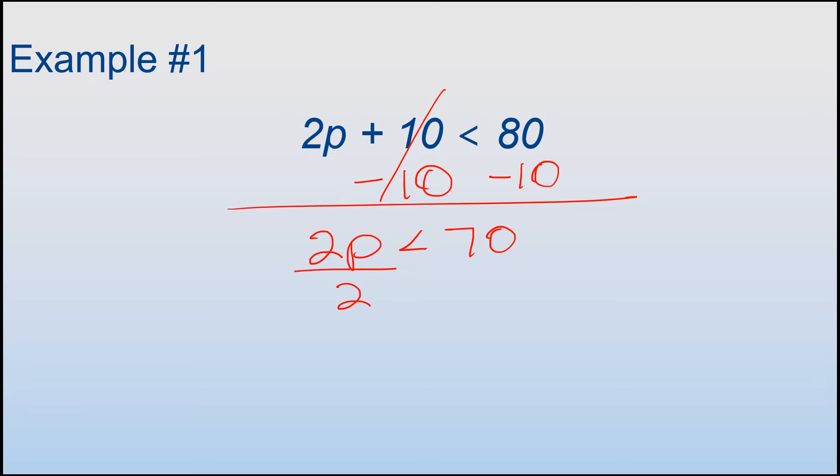I'm left with 2p < 70. Divide both sides by 2 to get the p by itself. Right now the relationship between the 2 and the p is multiplication. The opposite of multiplication is division, so I'm going to divide both sides by the 2. That gets rid of the 2 on this side, so the p is left alone now.